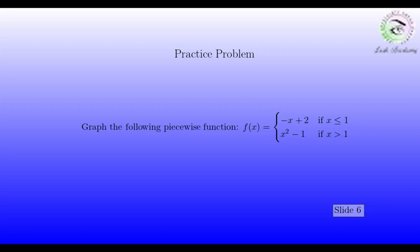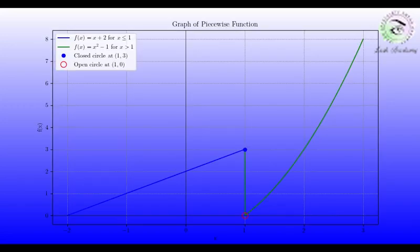Then we draw a straight line graph for x plus 2 on the x is less than or equal to 1 piece and the upward parabolic shape x squared minus 1 on the x is greater than 1 piece.